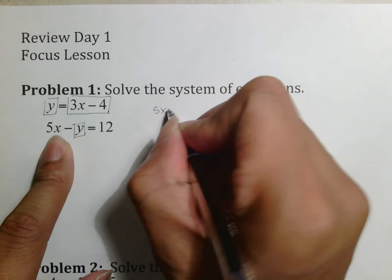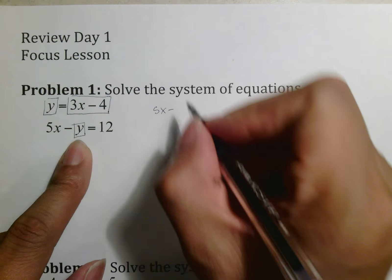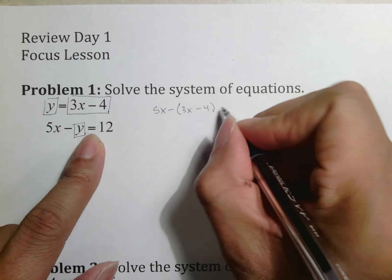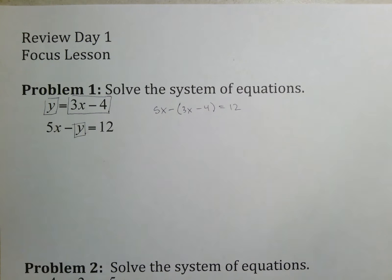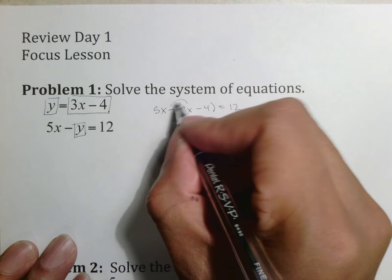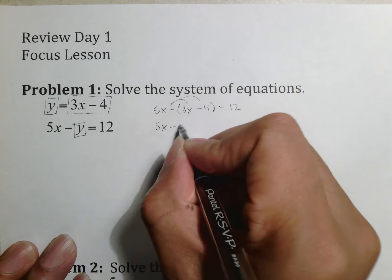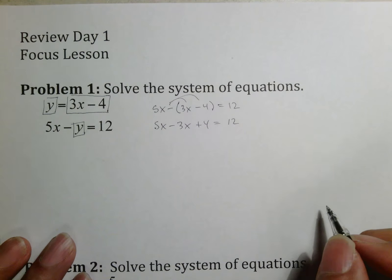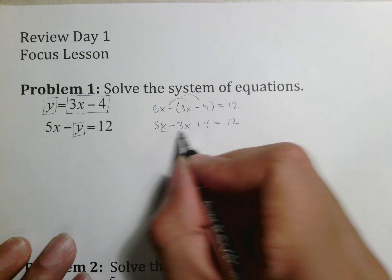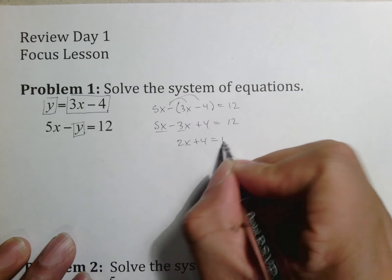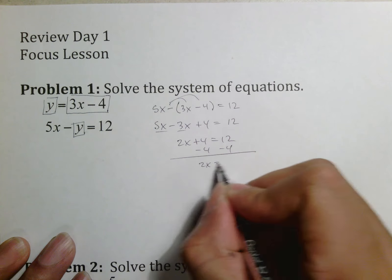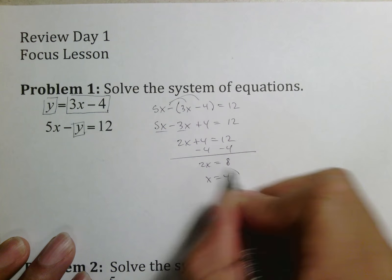If I recall, I'm supposed to write everything in front of the box, which is 5x minus, then I'm supposed to switch this out for my substitution using parentheses: 3x minus 4, and then everything behind the box, which is equals 12. The negative actually switches both of those, so it turns into 5x minus 3x plus 4 equals 12.